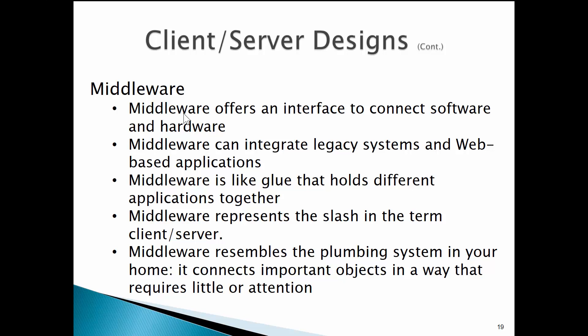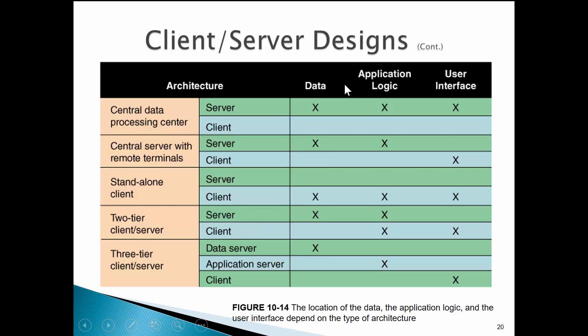Middleware resembles the plumbing system in your house — it connects important objects in a way that requires little attention. Here's a graphic: in a central data processing center you have a server, application, and user interface all coming over the web. Versus a central server with remote terminals — a mainframe — where data and logic sit on the mainframe and the terminal is a dumb client. Standalone has everything on the client. Two-tier uses server and client with application logic split between them. Three-tier is three independent layers, offering more feature functionality and performance, but also opening up more potential attack surfaces for hacking.